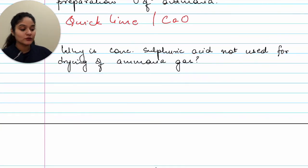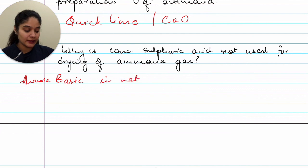Why is concentrated sulfuric acid not used for drying ammonia gas? So the reason is ammonia gas is basic in nature. So if you react a basic compound with an acidic compound, you would end up having a reaction. So instead of sulfuric acid drying out ammonia gas, it would end up reacting with it. So we would say ammonia is basic in nature, therefore reacts with concentrated sulfuric acid.